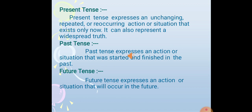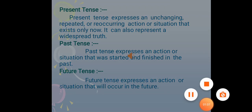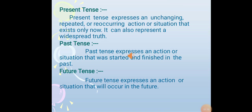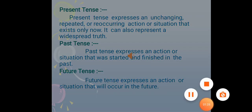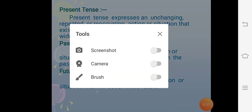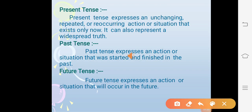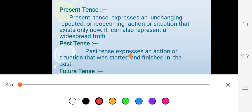Present tense expresses an unchanging, repeated, or reoccurring action or situation that exists only now. It can also represent a widespread truth or universal truth. Past tense expresses an action or situation that was started and finished in the past. Future tense expresses an action or situation that will occur in the future.